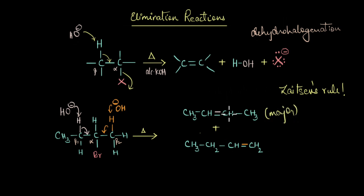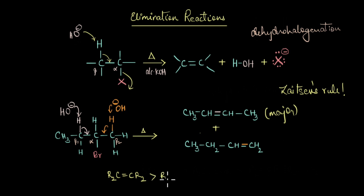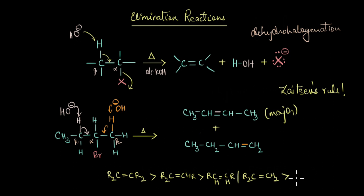Based on this, a tetrasubstituted alkene would be the most stable and therefore the most predominant, followed by a trisubstituted alkene, followed by a disubstituted alkene, which is followed by a monosubstituted alkene. Now, just like substitution reactions, elimination reactions can also occur by two different mechanisms.